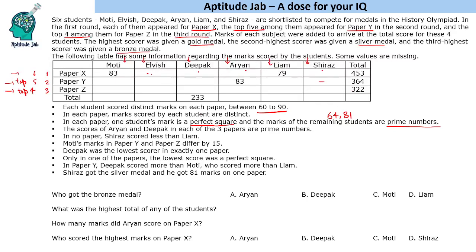In paper X there are 6 numbers and the total is odd. If you add 6 odd numbers the total is even, but the total is given as 453 which is odd — so we must have 5 odd plus one even number, meaning 64 appears in paper X. In paper Y with 5 people, to get an even total we need 4 odd plus one even, so 64 appears there too. In paper Z with 4 people, to get an even total we need all 4 odd, so 81 appears in paper Z.